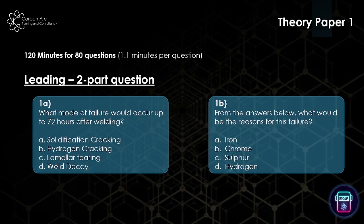Question 1A says: what motor failure would occur up to 72 hours after welding? Here we would be looking for hydrogen cracking. Then B connects to A, asking from the answers below, what would be the reasons for this failure? The best answer there would be hydrogen. The key thing that will catch people out: if you get question A wrong, you are more likely to get question B wrong. The idea is to understand the candidate's ability to know the right answer and then apply logic to it in the real world.